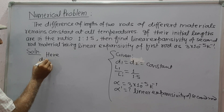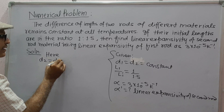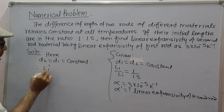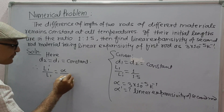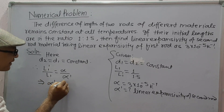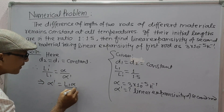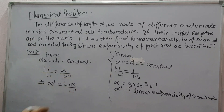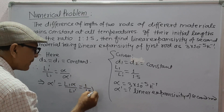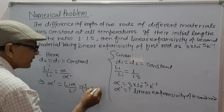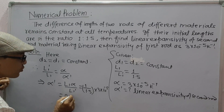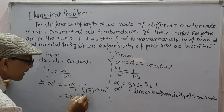Since D2 equals D1 equals constant, L1 dash upon L1 equals alpha upon alpha dash, which gives alpha dash as L1 alpha upon L1 dash. Here, L1 upon L1 dash is given as 1 upon 1.5 and alpha is 3 into 10 to the power minus 5. So we get alpha dash as 2 into 10 to the power minus 5 per Kelvin.